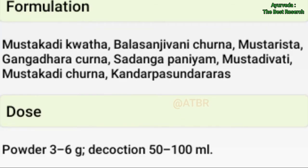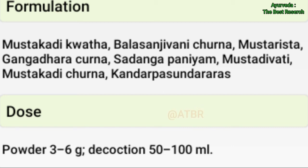Formulations include Mustakadi Kwatha, Bala Sanjivani Churna, Musta Arishta, Gangadhar Churna, Shadanga Paniya, Mustadi Vati, and Mustakadi Churna. Doses: for powder, 3 to 6 grams; for decoction, 50 to 100 ml.